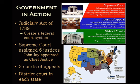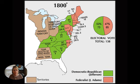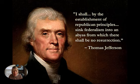Today our Supreme Court has nine justices, but before we get to that, let's look at how we determine what the Supreme Court is actually going to do. To understand that, we have to go back to the election of 1800, where Thomas Jefferson takes over as President of the United States and we see a shift from a Federalist-controlled government to a Democratic Republican-controlled government at the executive and legislative branches. Jefferson, while running for office, had been quoted as saying: "I shall by the establishment of Republican principles sink Federalism into an abyss from which there shall be no resurrection."